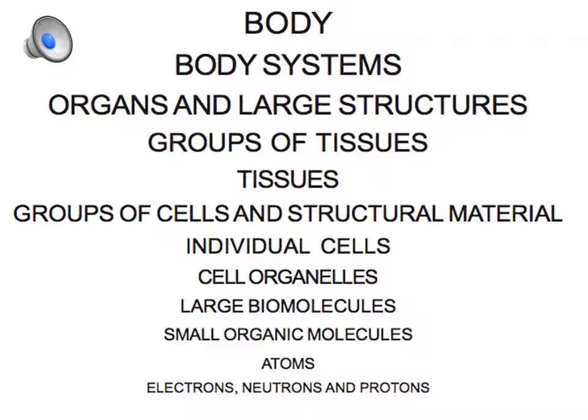So, it's amazing that we're made up of these just 26 elements arranged into chemical molecules, arranged into larger biological molecules, arranged into organelles, arranged into cells, arranged into tissues, arranged into groups of tissues, arranged into larger structures, arranged into body systems, arranged into bodies that exist within their social context.